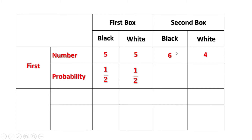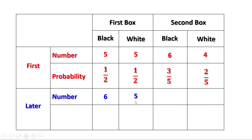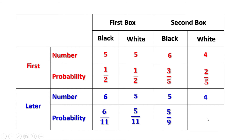Now let us take the second situation, where we moved one black bead from the second box into the first. So: number of black beads in the first box is 6, white beads is 5; number of black beads in the second box is 5, white beads is 4. Probability of getting a black bead from the first box is 6 by 11, and probability of getting a white bead is 5 by 11. Probability of getting a black bead from the second box is 5 by 9, and white bead is 4 by 9.